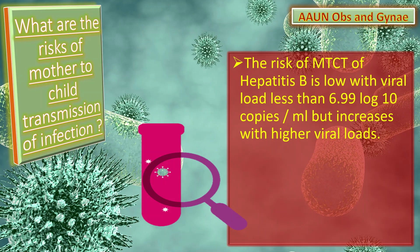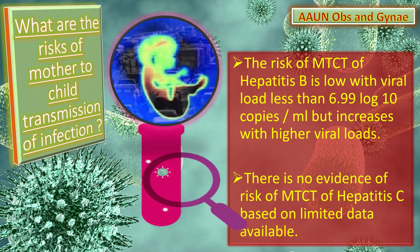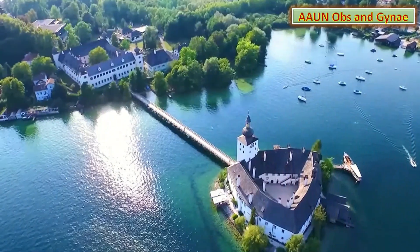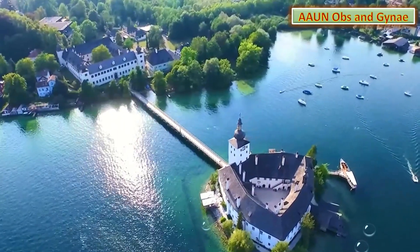The higher the viral load, the higher the risk of transmission to the baby. There is no evidence on the risk of mother-to-child transmission of hepatitis C based on the limited data available. These are the salient features of this RCOG guideline.